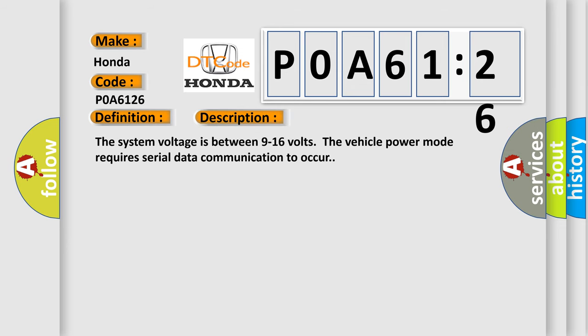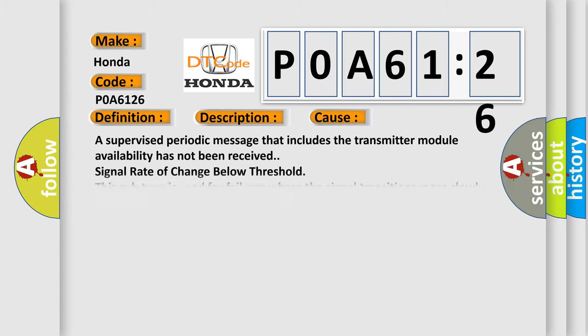The system voltage is between 9 to 16 volts. The vehicle power mode requires a serial data communication to occur. This diagnostic error occurs most often in these cases.